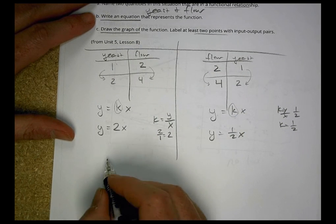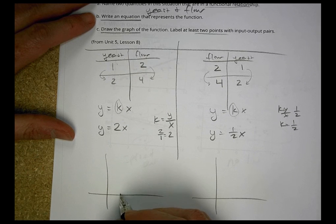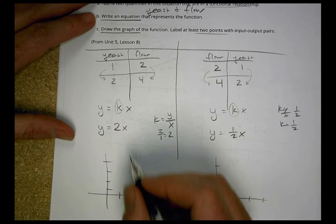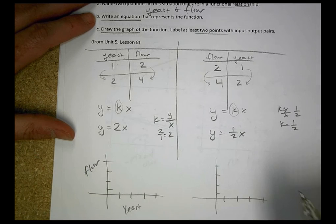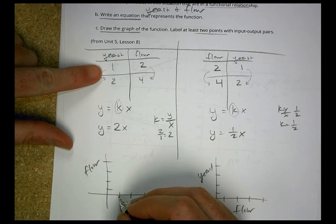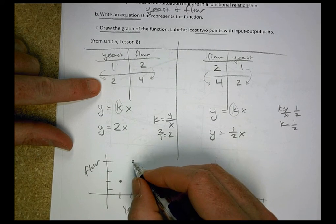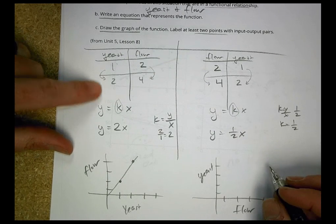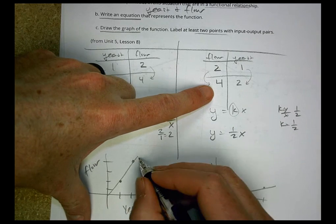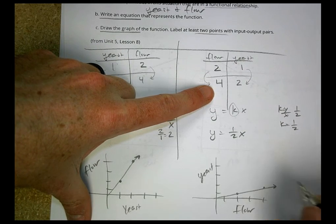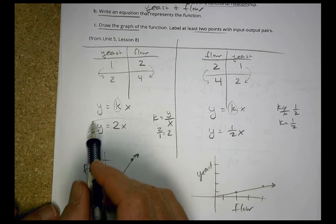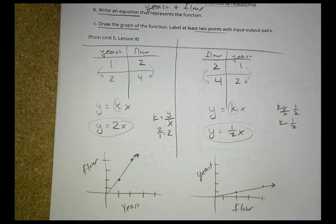Now graphing these: with yeast on the x-axis and flour on y, I plot points (1, 2) and (2, 4) — that's the y = 2x graph. Over here, with flour on the x-axis and yeast on y, I plot (2, 1) and (4, 2) — that's the y = (1/2)x graph. Very different equations and very different graphs, but they both work and make sense. It just depends on which variable you say is a function of which.